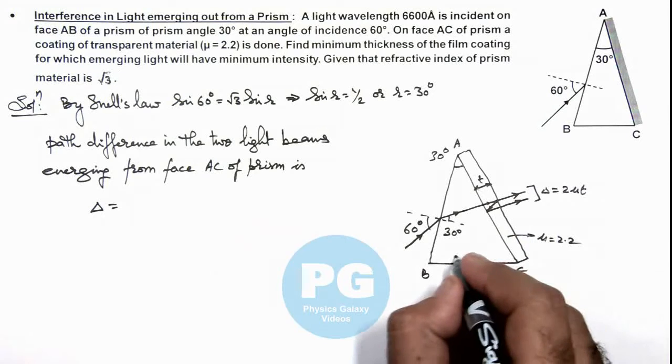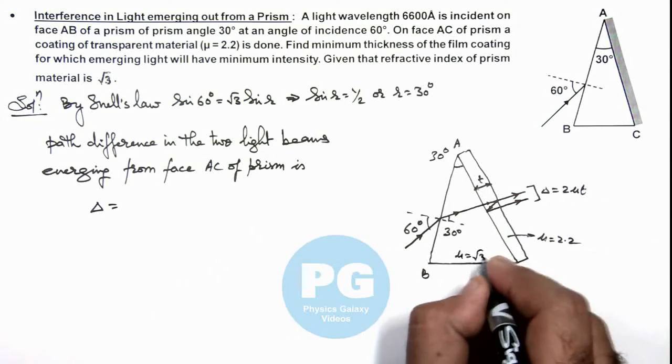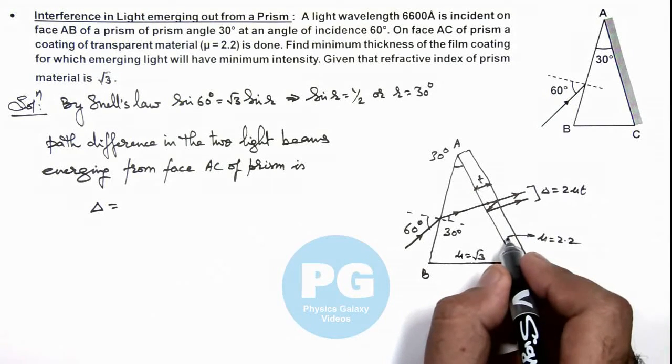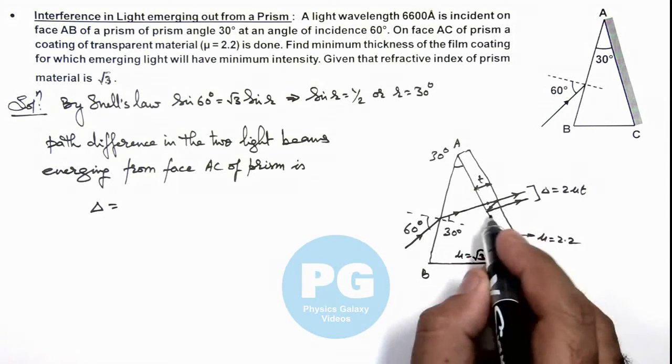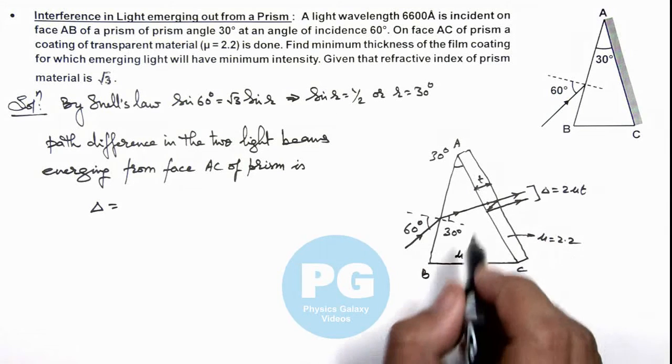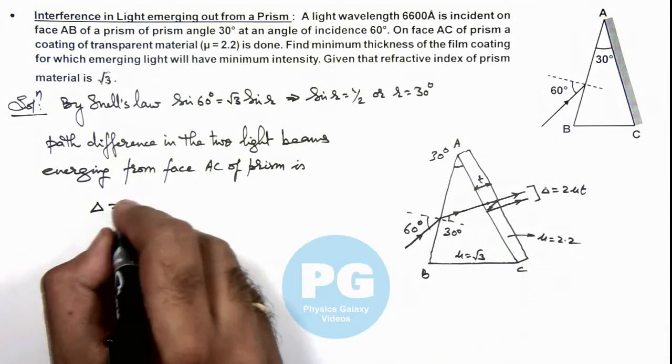And as here mu root 3 is a rarer medium compared to the film, it'll not introduce any additional phase lag in the path. So here we can say the path difference is only 2 mu t.